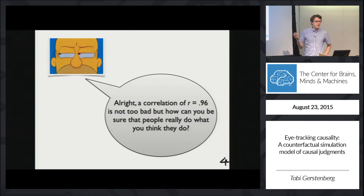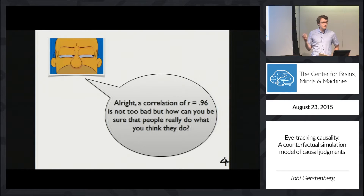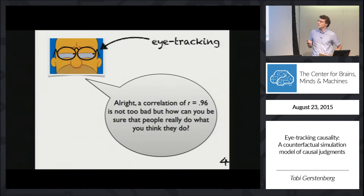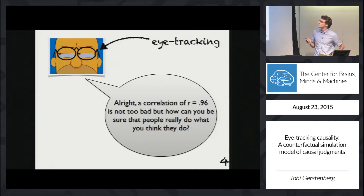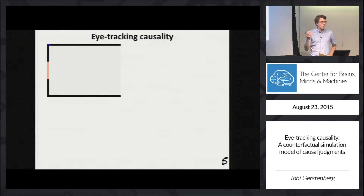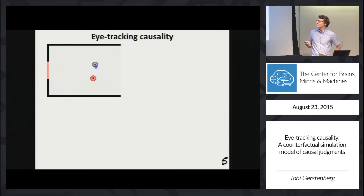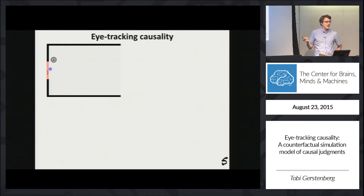You may say that's somewhat impressive — it's nice to have such a high correlation with a model that doesn't even have any free parameters. But how can you be sure that's really what people are doing? One way is by doing eye tracking and seeing what people look at when they watch the clips. Participants always saw a clip twice before making their causal judgment. The first time, the participant is just looking at what actually happened — that first step seems uncontroversial.